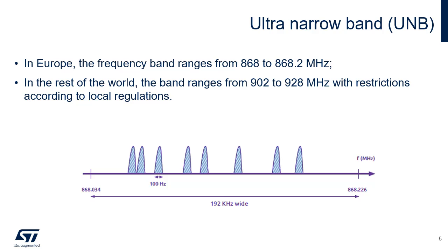Sigfox uses ultra-narrow band modulated signals to send information to the Sigfox network, enabling many devices to send data concurrently. Sigfox uses 192 kHz of the publicly available band to exchange messages over the air. Each message is 100 Hz wide and transferred with a data rate of 100 bits per second, or 600 Hz wide with a data rate of 600 bits per second, depending on the region.